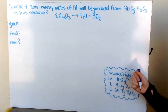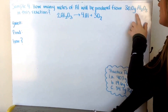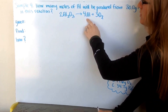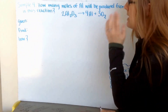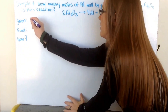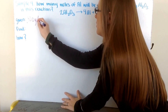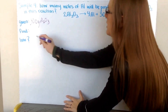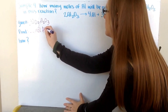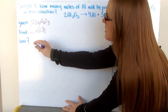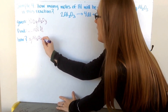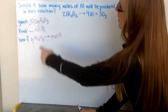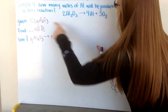Now let's walk through sample problem number 4. It asks how many moles of aluminum will be produced from 30.0 grams of aluminum oxide in this reaction: 2 moles of aluminum oxide decomposes into 4 moles of aluminum and 3 moles of oxygen. I'm given 30.0 grams of aluminum oxide, and I want to find moles of aluminum. But looking at my Mole Tropolis sheet, there's no direct route from grams of aluminum oxide to moles of aluminum.